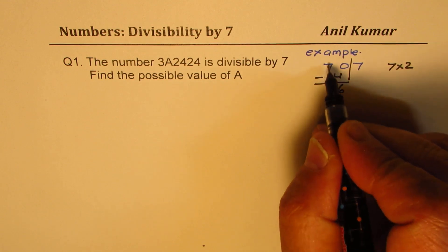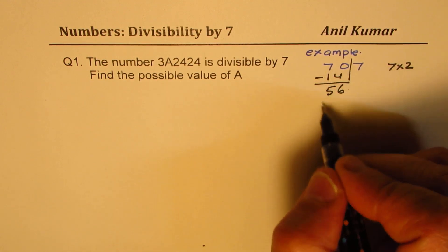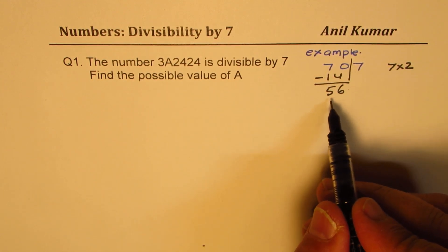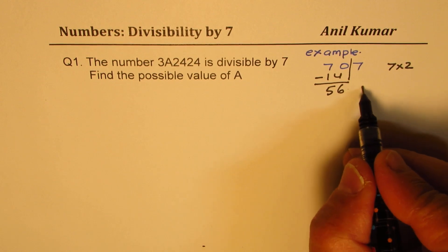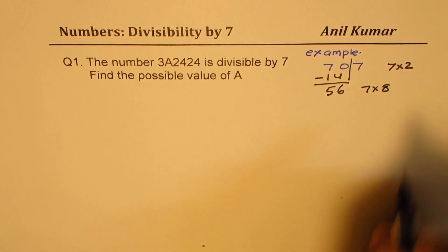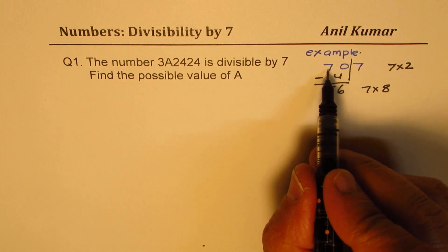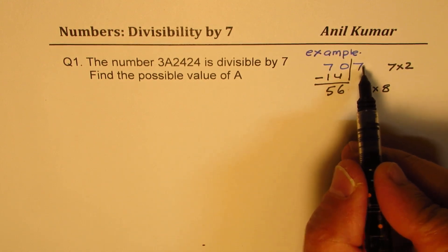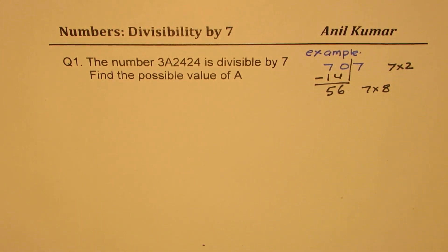So we get 6 and 5. So the last two digits which we get here is 56 and you know this is 7 times 8. Since it is a product of 7, so 707 is also a product of 7. So that is how we conclude.